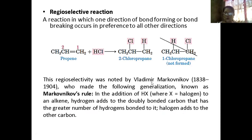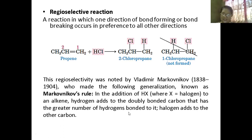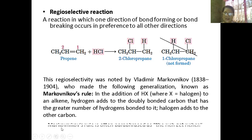Markovnikov's rule — Vladimir Markovnikov, a Russian chemist — made this general rule for the addition of hydrogen halides (HX). In the double-bonded carbons, the hydrogen will attach to the carbon with the greater number of hydrogens. The halogen will attach to the carbon with the lesser number of hydrogens. This is nicknamed 'the rich get richer.'